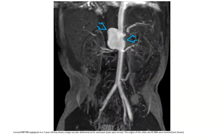MIP image in a seven-month-old boy shows a saccular abdominal aortic aneurysm. The origin of the celiac axis and SMA were involved.